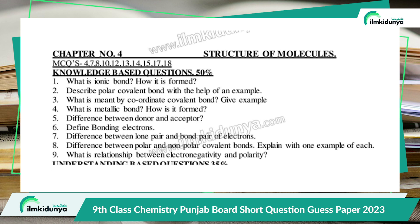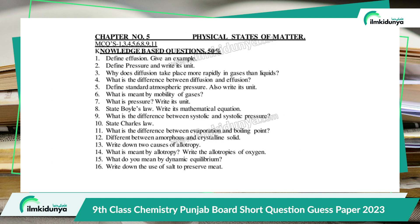Chapter 4 is Structure of Molecules. The important short questions are: What is an ionic bond and how is it formed? Describe a polar covalent bond with the help of an example. What is meant by coordinate covalent bond — give an example. What is metallic bond and how is it formed? Difference between donor and acceptor — this is a very important question. Define bonding electrons. Difference between lone pair and bond pair of electrons. Difference between polar and non-polar covalent bond with example. What is the relationship between electronegativity and polarity?